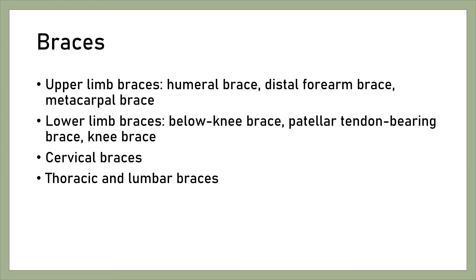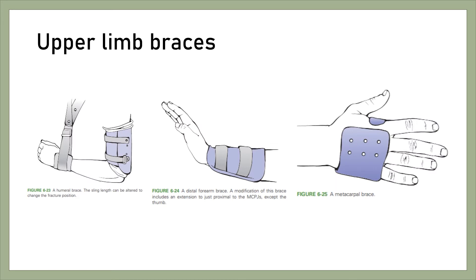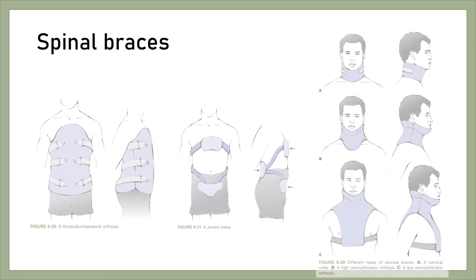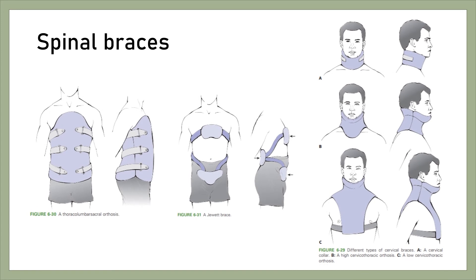There are also cervical braces and thoracic and lumbar braces. Illustrations of upper limb braces, lower limb braces, and spinal braces are provided. There are three types of cervical braces: soft and hard collars, high cervical thoracic orthosis, and low cervical thoracic orthosis.